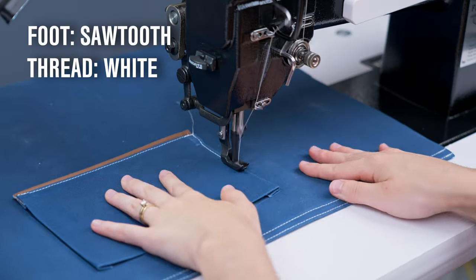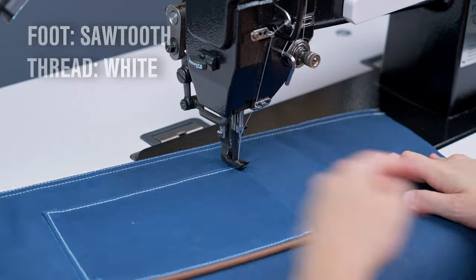Then, we're going to head back to our sewing machine and sew an eighth inch seam around the side and bottom edges of the pocket.